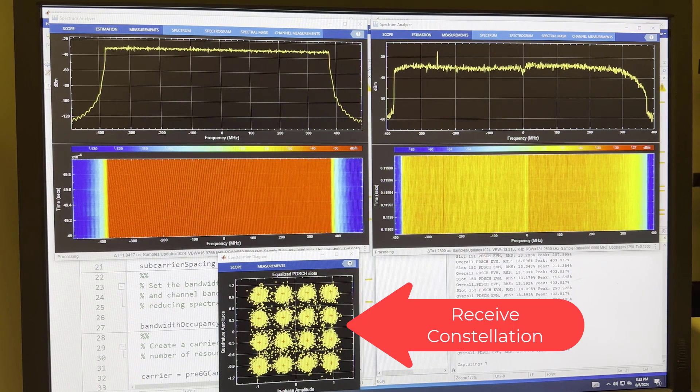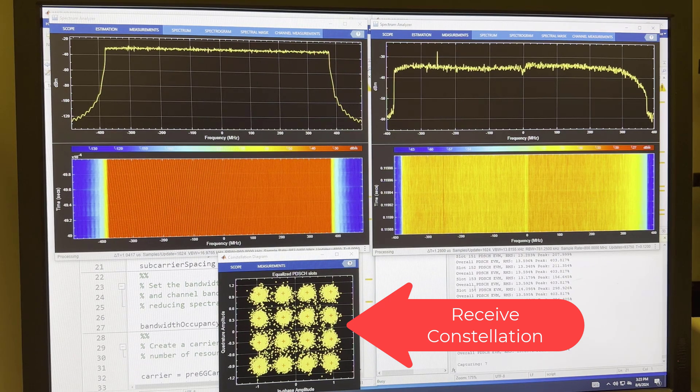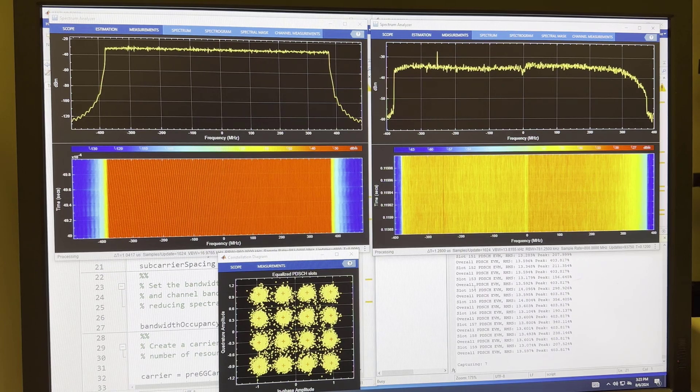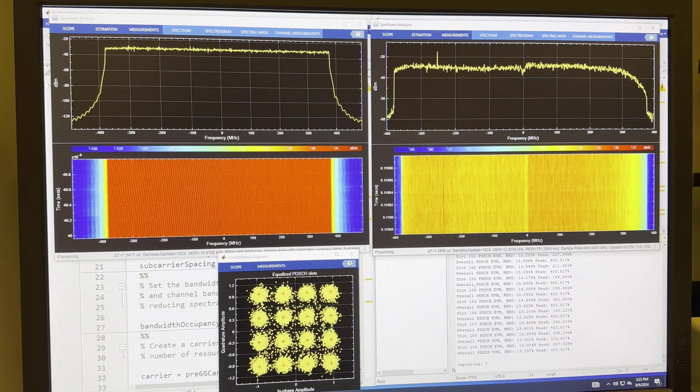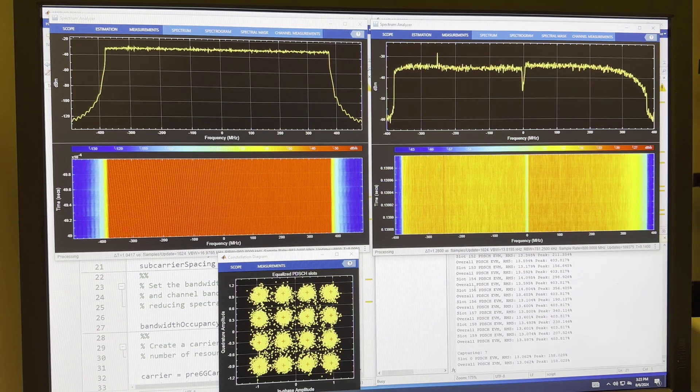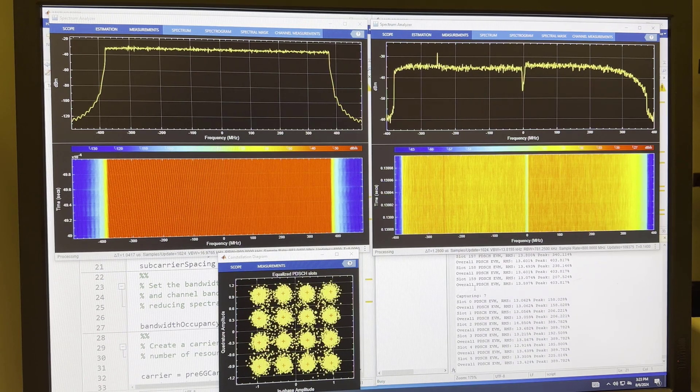And then finally, the constellation diagram on the lower left, that is the received constellation diagram with the impairments that you see spectrally on the right. So you can certainly identify this as a 16 QAM signal. But it's not pinpoints. You got serious clouds there. So again, opportunities for making this even better.